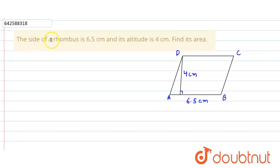In the given question, the side of a rhombus is given to be 6.5 cm and its altitude is 4 cm. Then we have to find its area.